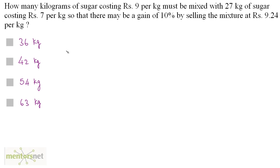How many kilograms of sugar costing Rs. 9 per kg must be mixed with 27 kg of sugar costing Rs. 7 per kg, so that there may be a gain of 10% by selling the mixture at Rs. 9.24 per kg?